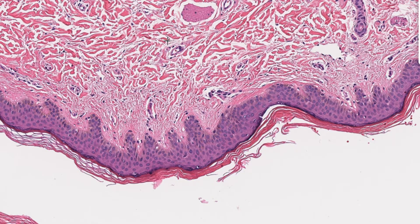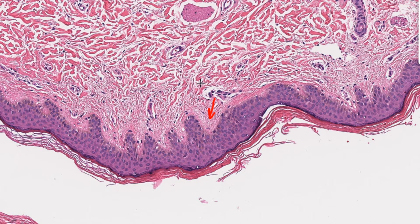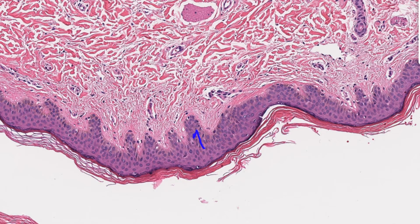The papillary layer together with the epidermis creates the dermal-epidermal junction. In this junction, both the epidermis and dermis have these finger-like projections interdigitating and holding each other together. The protrusions on the dermal side are called dermal papillae, and the ones on the epidermal side are called epidermal ridges.